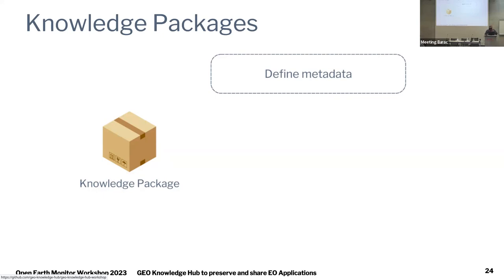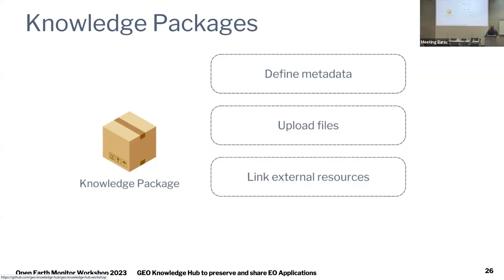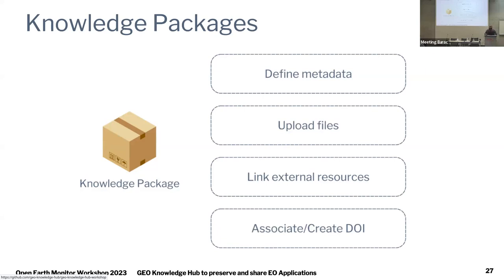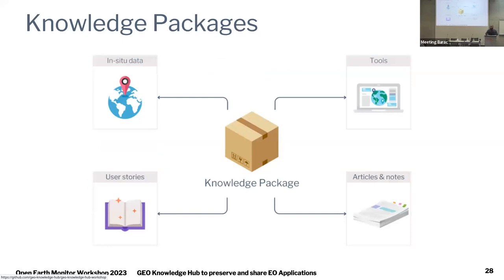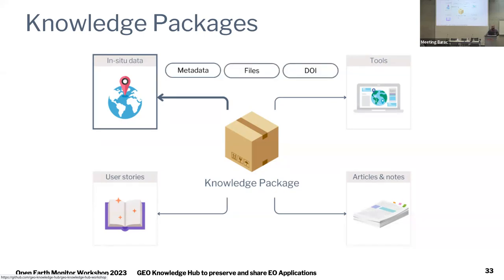To define a knowledge package, we use metadata based on the DataCite schema version 4, so you can have title, description, contributors, and so on. You can also upload files, link the package with external resources or services, and create or associate DOIs with that package. Resources inside the package follow the same structure — metadata, files, and DOIs — giving us two levels of definition: the knowledge package level and the resources level.